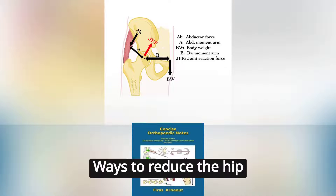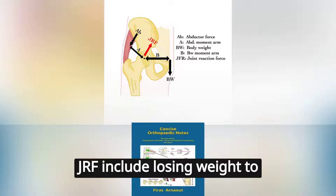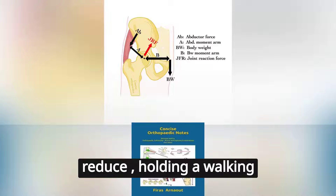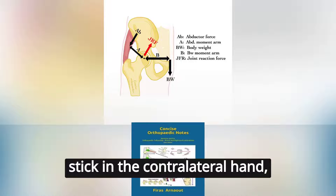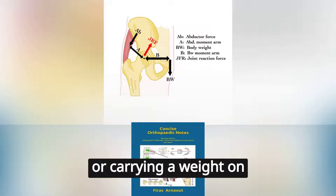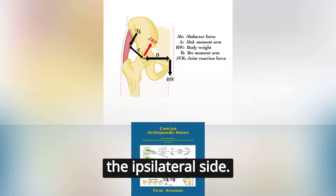Ways to reduce the hip JRF include losing weight, holding a walking stick in the contralateral hand, or carrying a weight on the ipsilateral side.